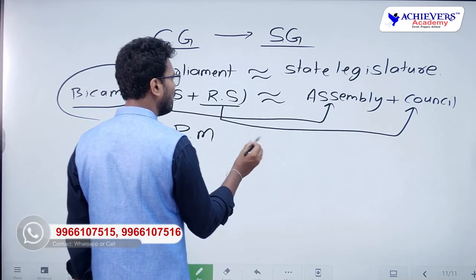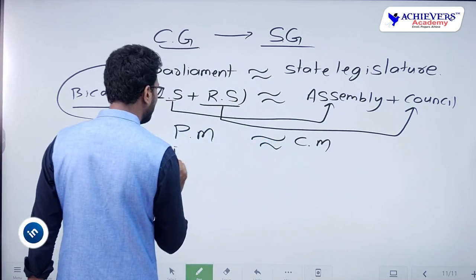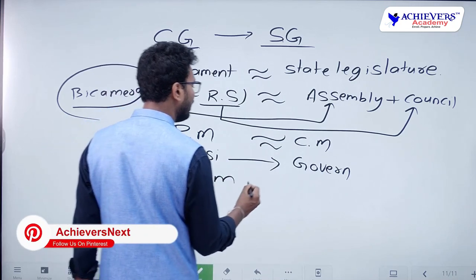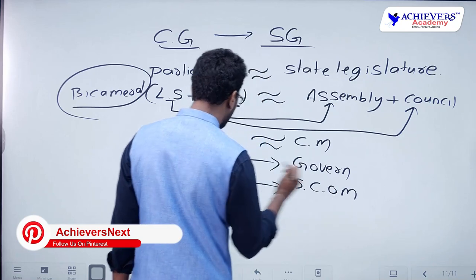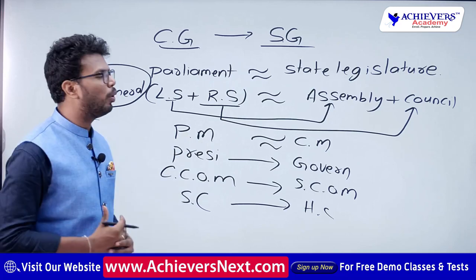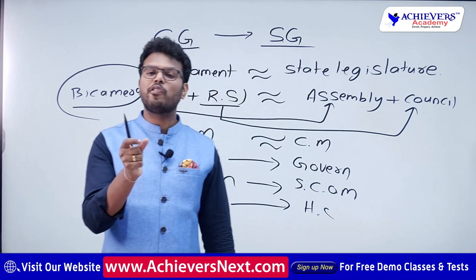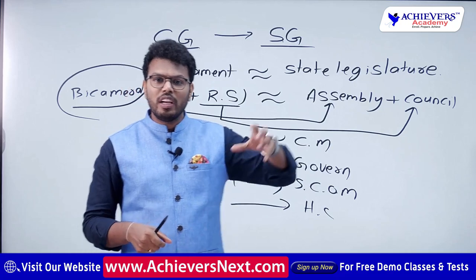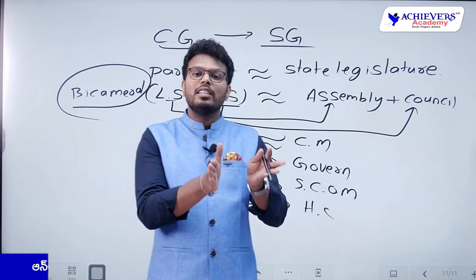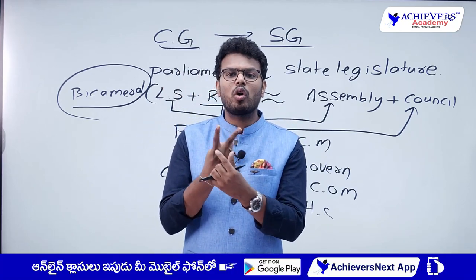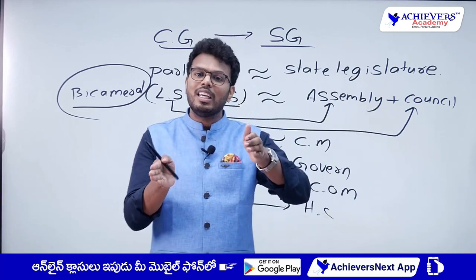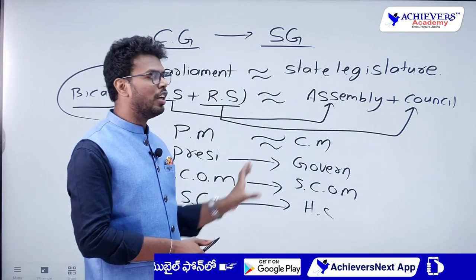At the level of center there will be a Prime Minister; at the level of state, a Chief Minister. At center there is a President of India; at state there is a Governor. At center there is a Central Council of Ministers; at state a State Council of Ministers. At center there is a Supreme Court; at state there is a High Court. Wherever you see the federal concept, there is a sharing or division of powers, defined in the Seventh Schedule, which consists of the Union List, Concurrent List, and State List.